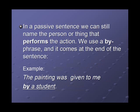In a passive sentence, we can still name the person or thing that performs the action. We use a 'by' phrase, and it comes at the end of the sentence. For example: the painting was given to me by a student. So the student is the person who performed the action. Not all passive sentences will use a 'by' phrase — we use it only if it's possible and important to name the performer. We'll talk more about that a little bit later.